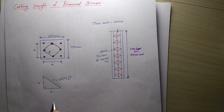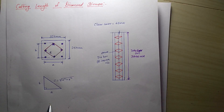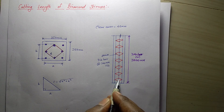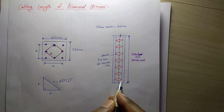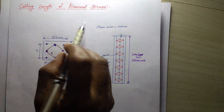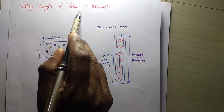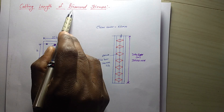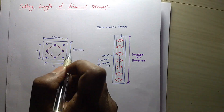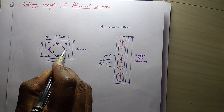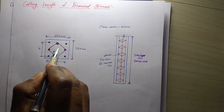Hi Friends! Let's talk about this video. For a time, there are stirrups — how to calculate stirrups. If you have a rectangle, it's very easy. It's in a diamond shape. So this shape — how to calculate. Ok?